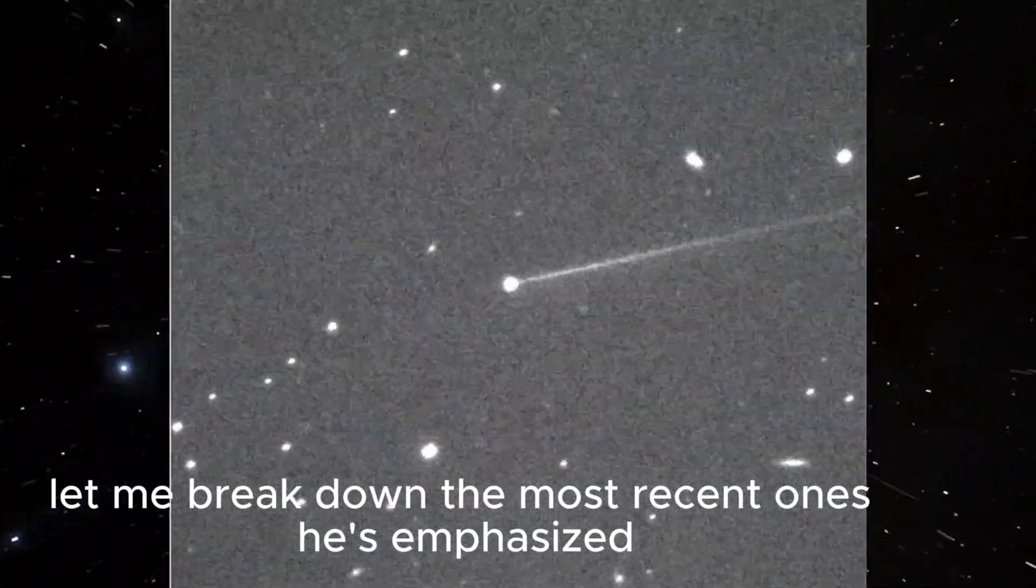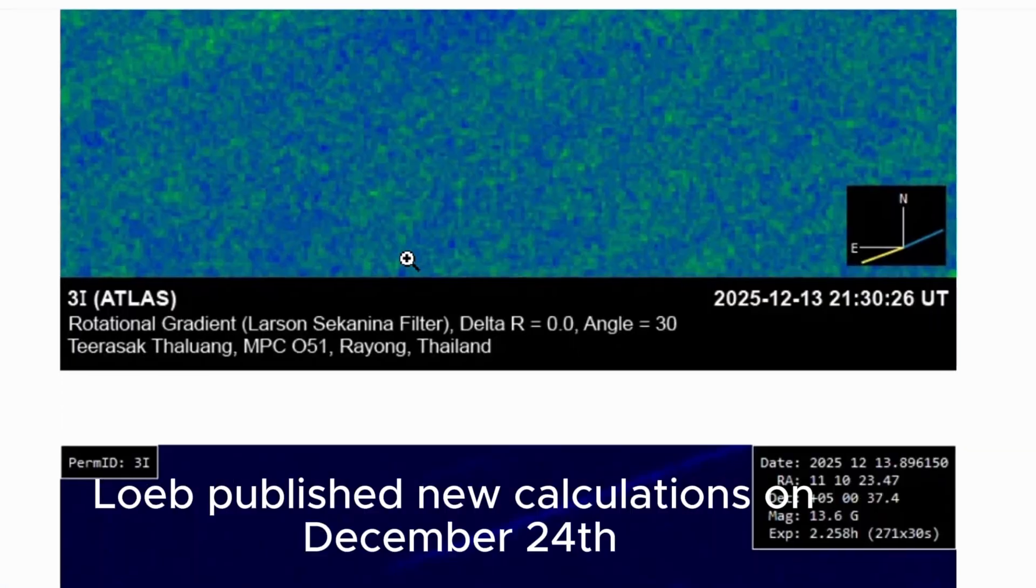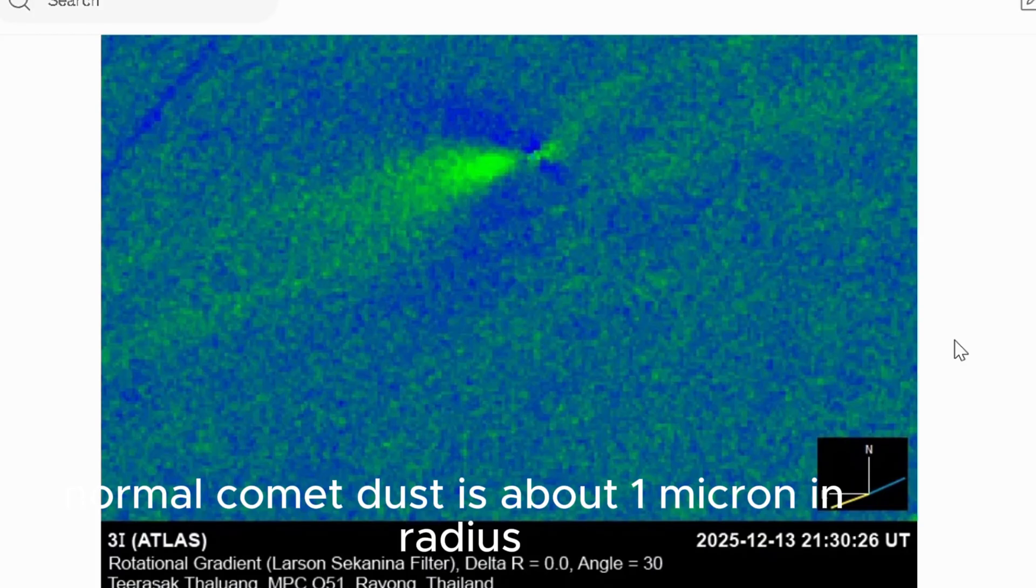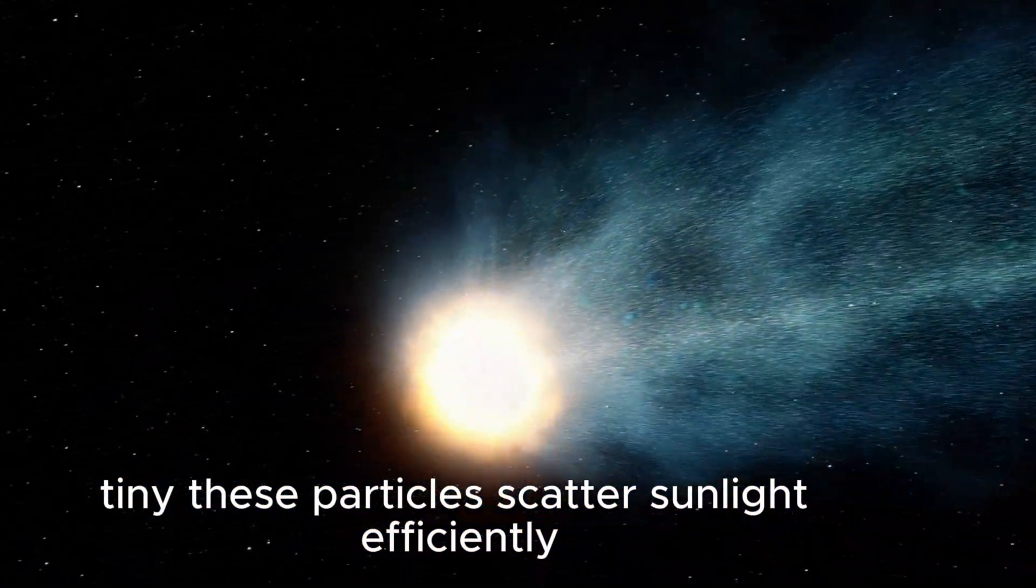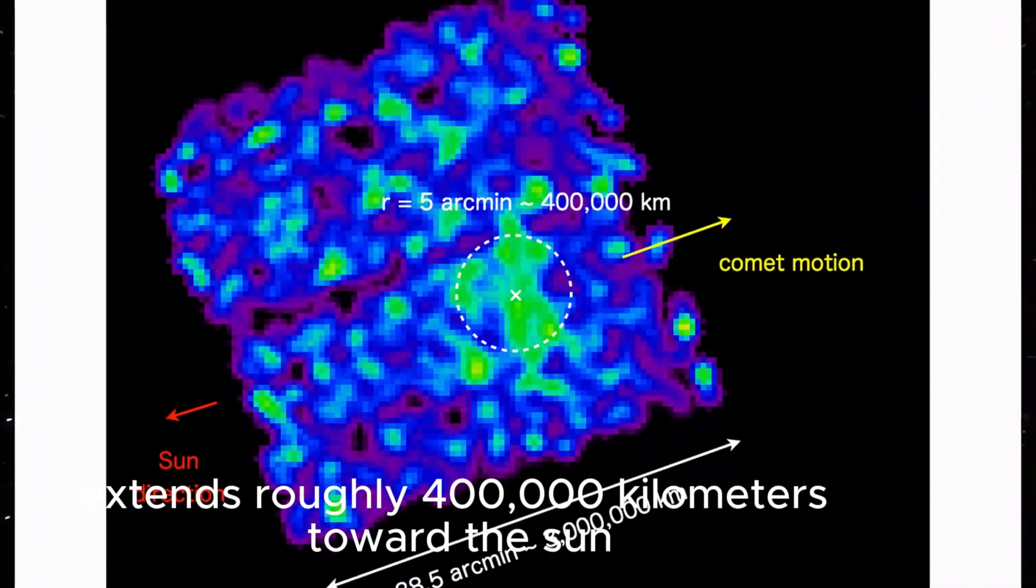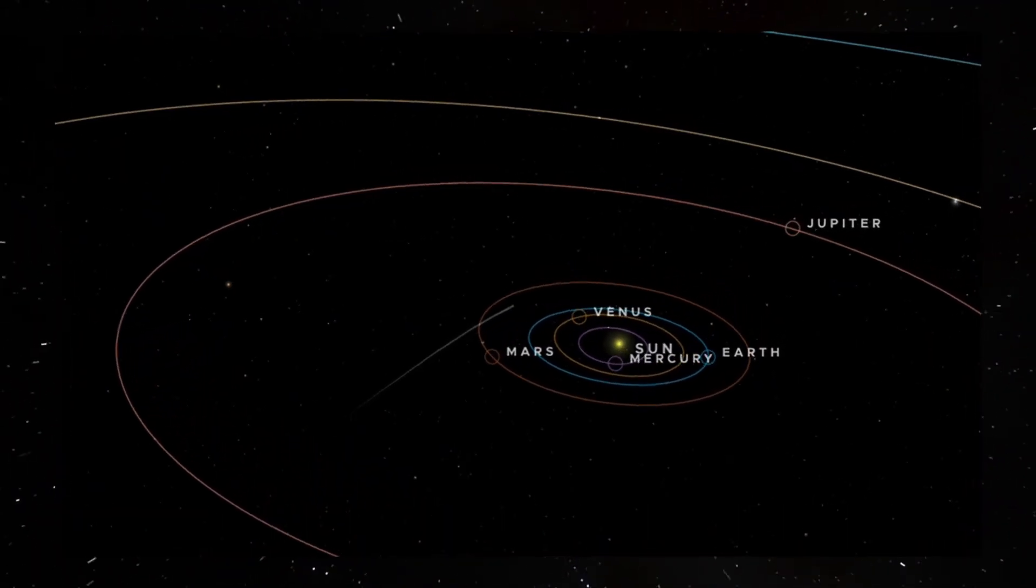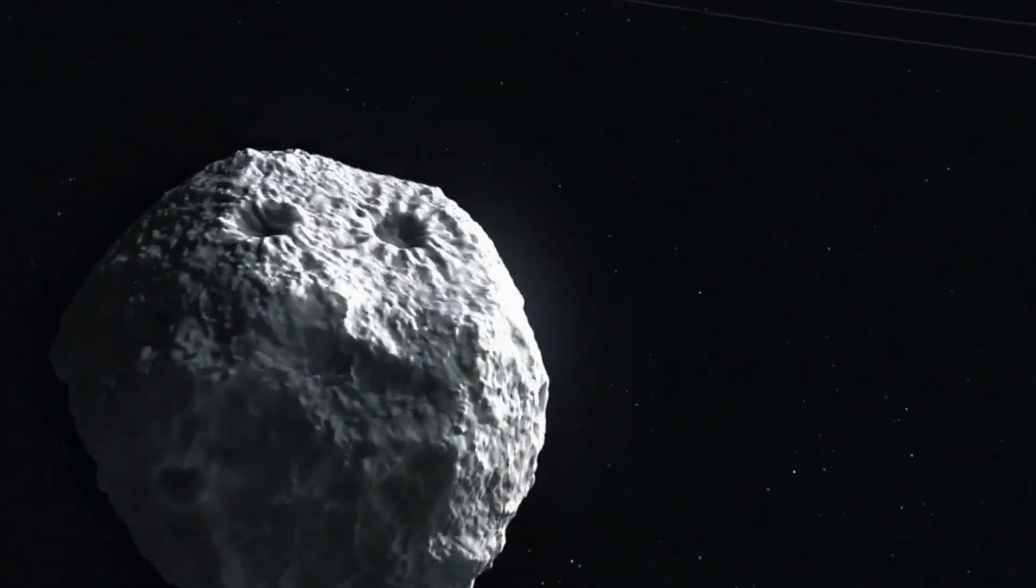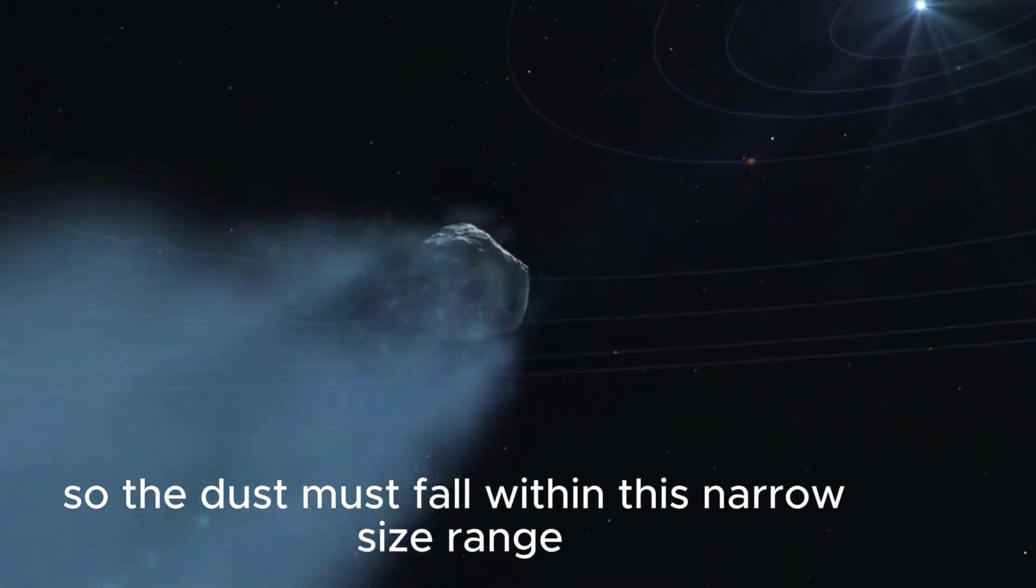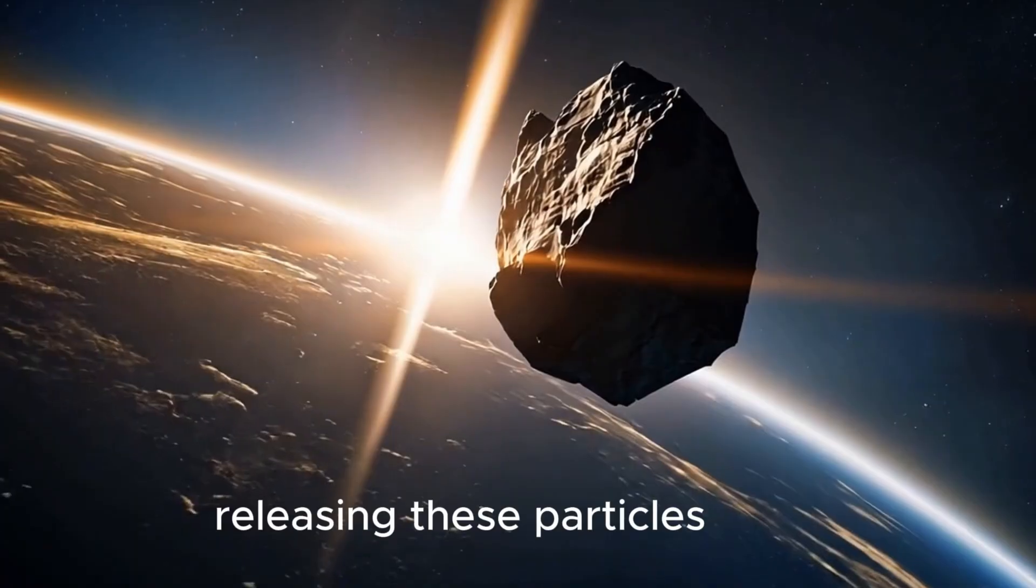Let me break down the most recent ones he's emphasized. The first major update involves the dust particle size and the anti-tail. Loeb published new calculations on December 24th showing that the particles being shed must be much larger than typical comet dust. Normal comet dust is about one micron in radius. Tiny. These particles scatter sunlight efficiently and get pushed away by solar radiation pressure. But the anti-tail of 3i Atlas extends roughly 400,000 kilometers toward the sun. For particles to reach that distance before solar radiation pressure stops them, they must be much larger than one micron. But they also must be much smaller than 100 microns, because if they were too large, the outflowing gas wouldn't be able to drag them fast enough to produce the observed jet speed. So the dust must fall within this narrow size range, between 1 and 100 microns. That's a very specific constraint. And it tells us something important about the mechanism releasing these particles.